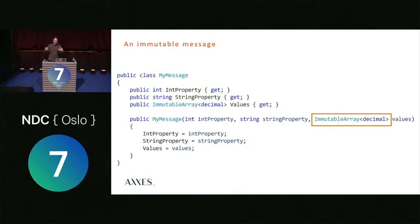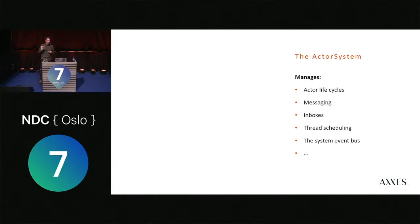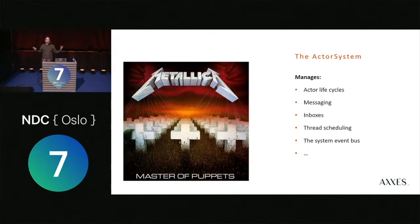We've got actors and messages — now we need to tie them together with an actor system. The actor system is the glue that makes everything happen. It manages the actor lifecycle: instantiates actor instances, kills them, handles their inboxes, dispatches messages, and takes care of all thread scheduling. There's also a publish-subscribe system for PubSub messaging between actors. It's basically the puppet master controlling the whole system.